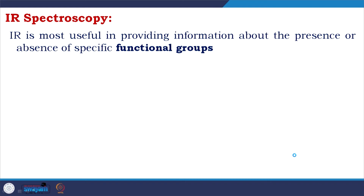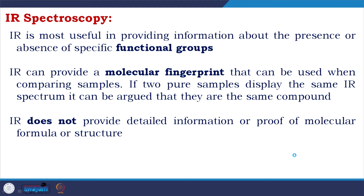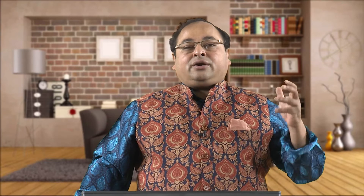Infrared spectroscopy is useful in providing information about the presence or absence of specific functional groups. IR can provide a molecular fingerprint for comparing samples — if two pure samples display the same IR spectrum, they can be argued to be the same compound. IR does not provide detailed proof of molecular formula or structure like NMR, but provides information on molecular fragments, especially functional groups.